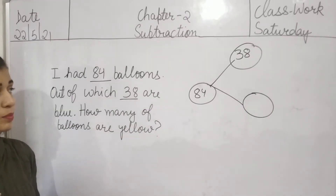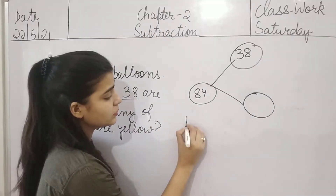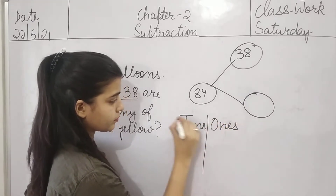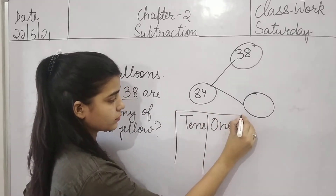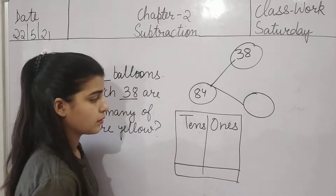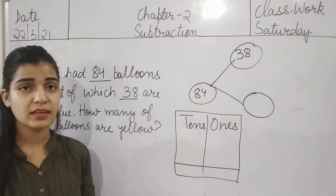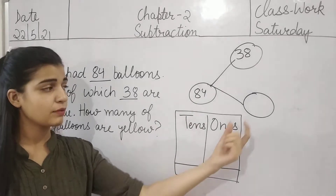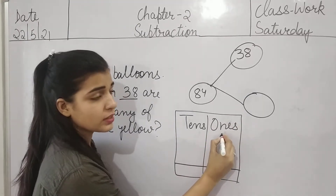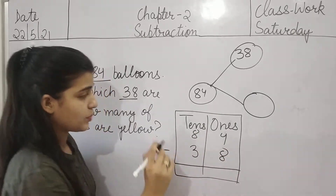To goh ham kaise nikal sakte hai? By the subtraction of one part from the whole. Right? So now we will make two columns — Tens and Ones. Now, 84 minus 38 — 84 mein se 38 ko minus karenge. Then we will get the second part of 84. So, 84: 4 is the smaller number. 38: 3 and 8. Now we will subtract this.